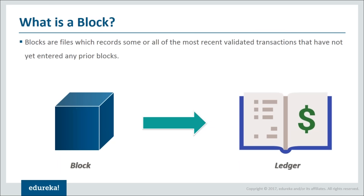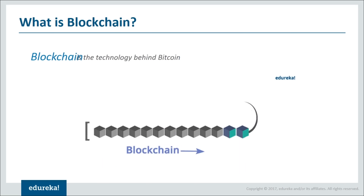To understand blockchain, let's first understand what a block is. A block is basically a simple file that records all the most recent transactions or information which have not yet entered any prior block. A block can be compared to your account ledger — all transactions which have not been printed since your last statement will be printed. All validated and approved transactions are present in the block.